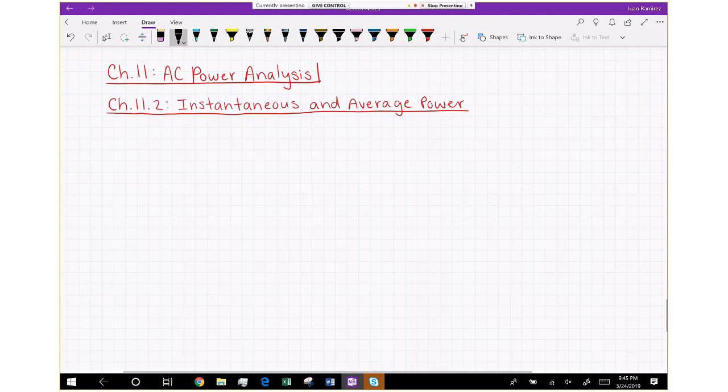Hey class, this is Juan Ramirez with EE 2725, Linear Circuits 3 AC, and today we're going to get into AC power analysis. That's chapter 11 of the Fundamentals of Electric Circuits book, and we'll start off with looking at instantaneous and average power.